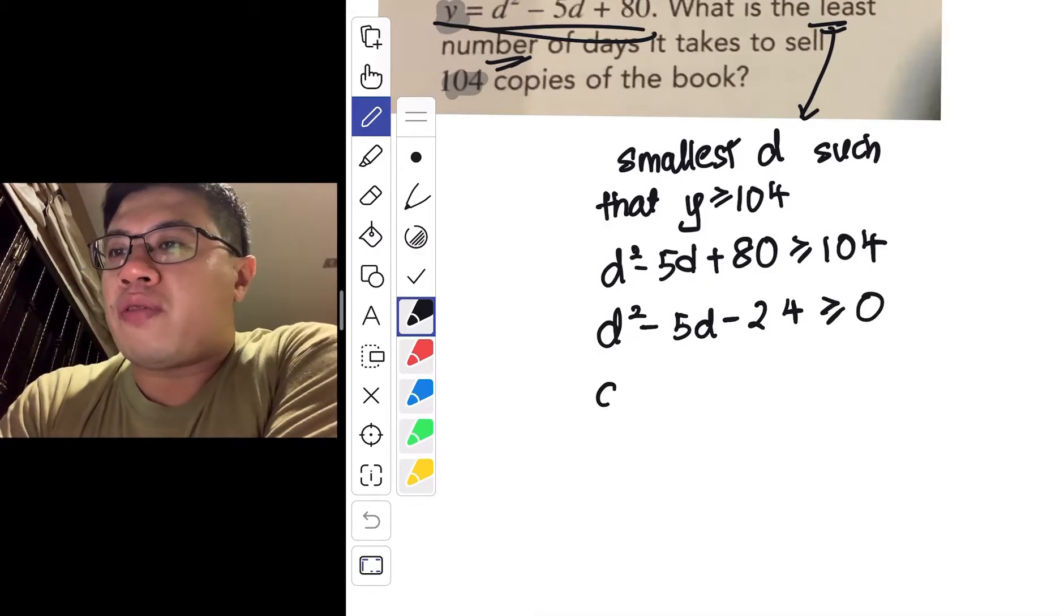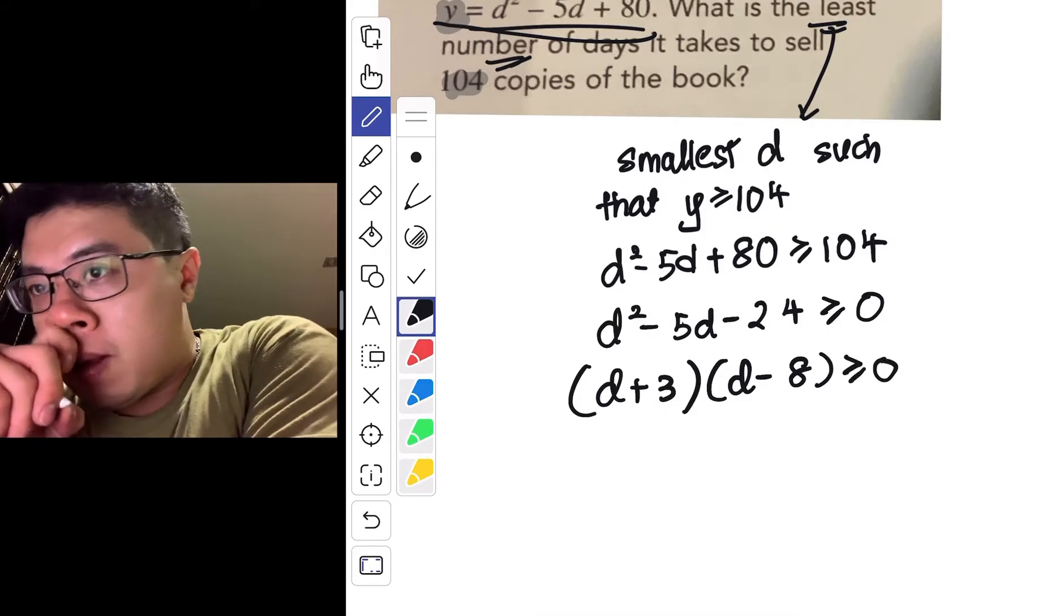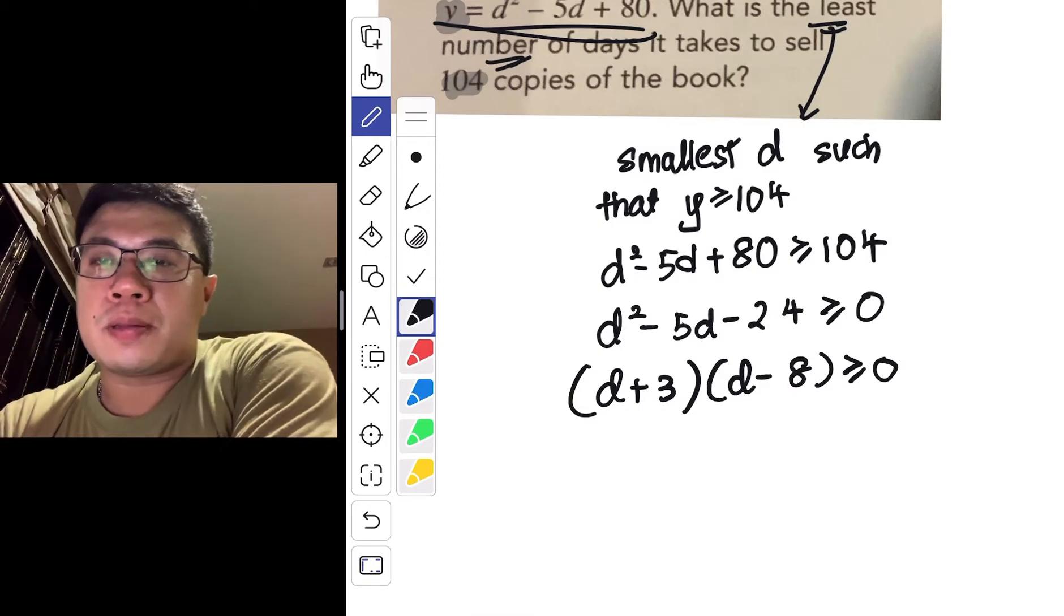to be more than equals to 0. So if I factorize this, this is d plus 3, bracket d minus 8, more than equals to 0. So this is basically me trying to find the x-intercepts.